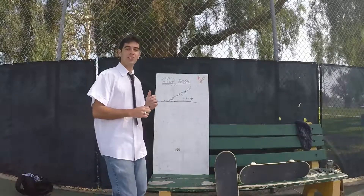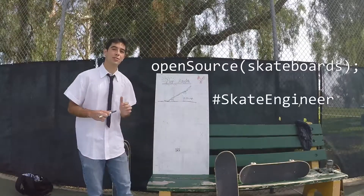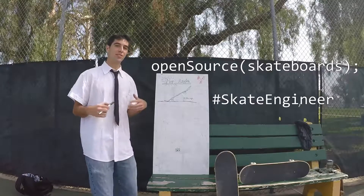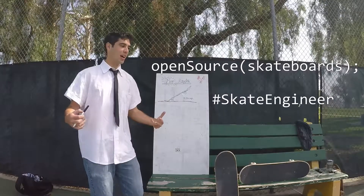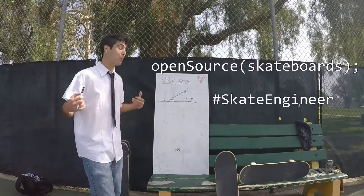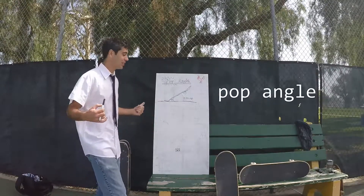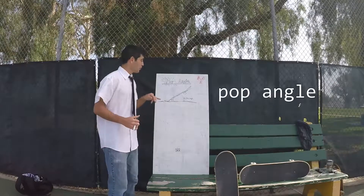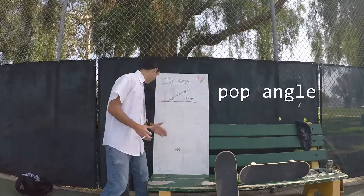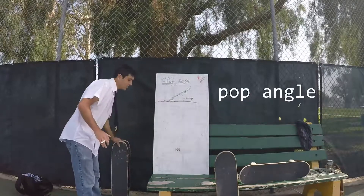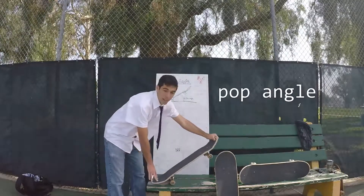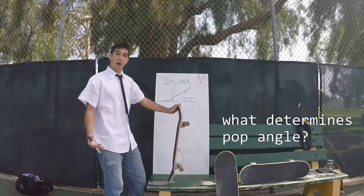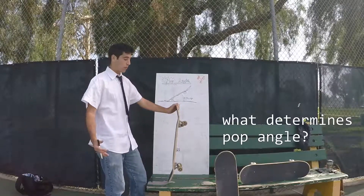Hey guys, it's Bo, Skate Engineer from Open Source Skateboards, and for this How to Design a Skateboard episode, we're going to talk about pop angle and what exactly that is. Pop angle is the angle that our board makes when we are popping it, like in an ollie. This angle is made up of a couple different features of our board.